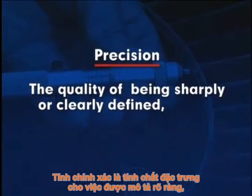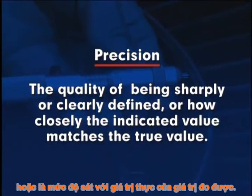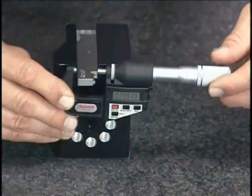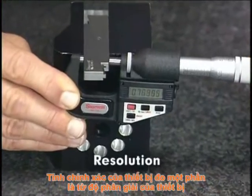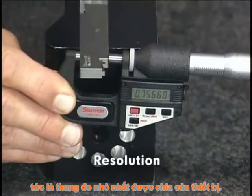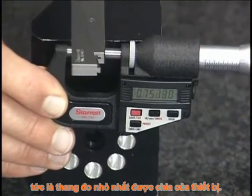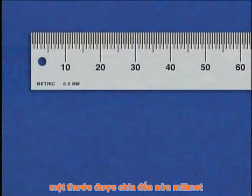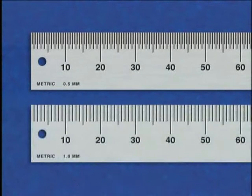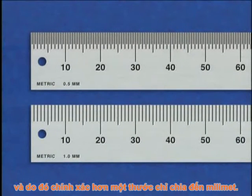Precision is the quality of being sharply or clearly defined, or how closely the indicated value matches the true value. The precision of a measurement device is in part a function of its resolution, which is the smallest graduation into which an instrument is divided. For example, a rule marked in one-half millimeters has a higher resolution and thus can be more precise than a rule marked in millimeters.